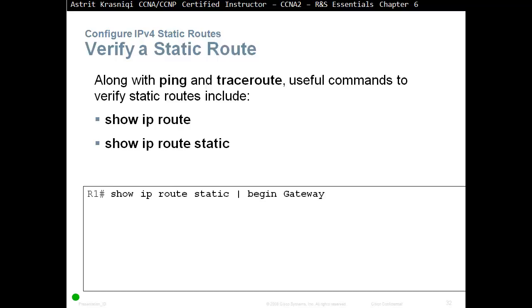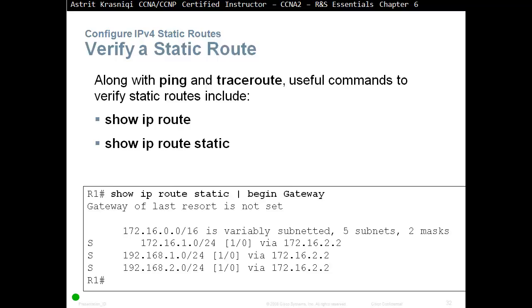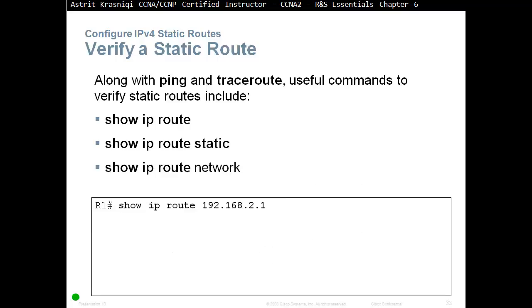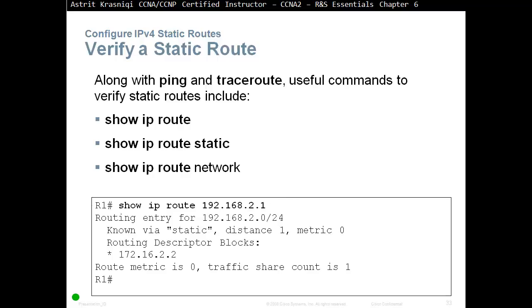Along with ping and traceroute, useful commands to verify static routes include 'show ip route static', which shows only the static routes — not dynamically or directly connected routes. Also 'show ip route [network]' — for example 'show ip route 192.168.2.1' — to see a single network's static route entry and confirm it's in the routing table.